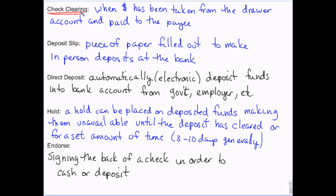The bank will tell you in your paperwork how long holds last and what triggers them. When endorsing — whenever you deposit an actual physical check — all the information is on the front of the check. You flip it over, there's a place to sign. You want to sign it and write your account number on it if you're depositing it. If you're just cashing it you can just sign it, but if you're depositing it, write your account number on there — because if something goes wrong and that money didn't show up in your account, they can look at the check and see which account it was supposed to go into.